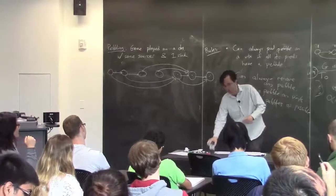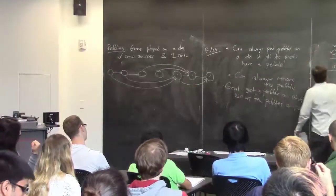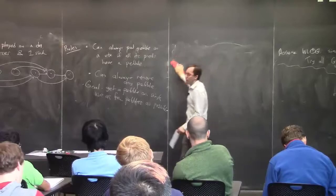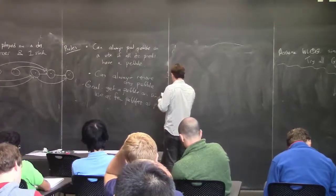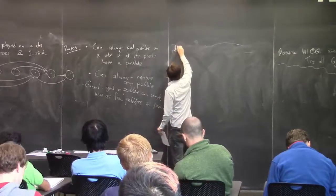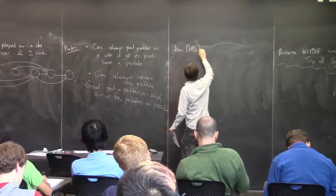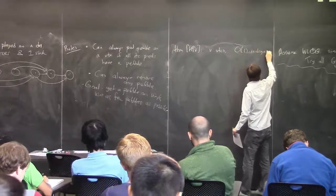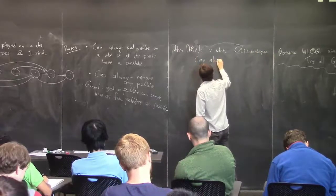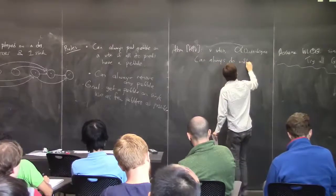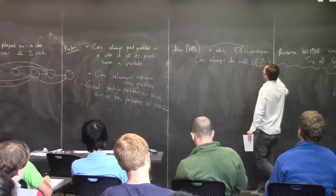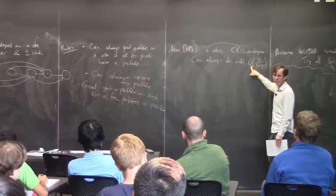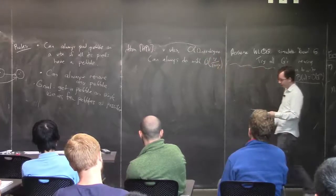So the theorem we need to prove — proved originally by Hopcroft–Paul–Valiant — is: for a DAG with V vertices and constant in-degree, you can always do it with O(V / log V) pebbles. The constant in the big-O depends on the in-degree: if the in-degree is c, the constant is roughly c². Since that's just the number of tapes for us, which is a fixed constant, it's not important.